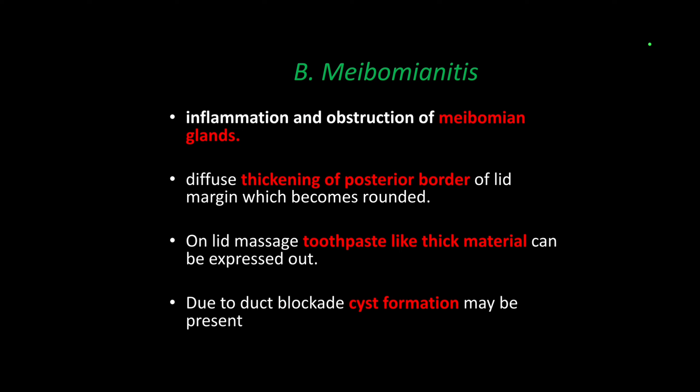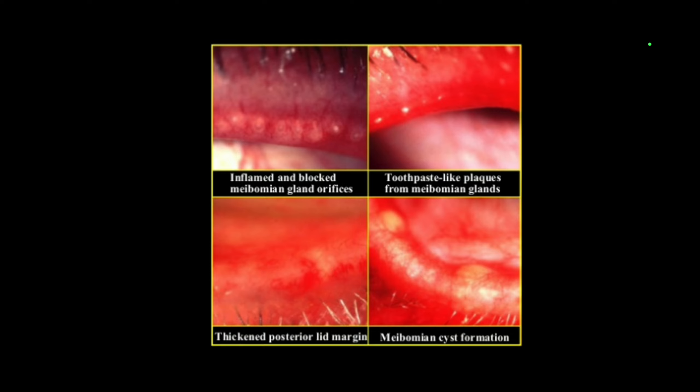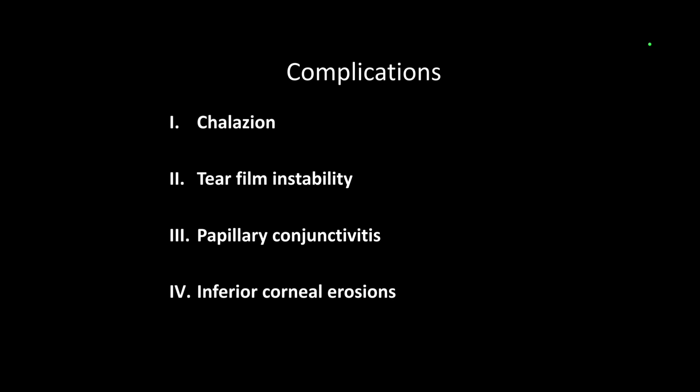Then comes meibomianitis. As the name suggests, it is inflammation of the meibomian glands. It causes thickening of the posterior border of the lid margin which becomes rounded. On lid massage, you will express toothpaste-like material from the meibomian duct. If this blockage occurs, it will result in chalazion, which we have already discussed in a previous video. There are complications: chalazion formation, tear film instability, papillary conjunctivitis, and inferior corneal changes — all related to the meibomian gland.